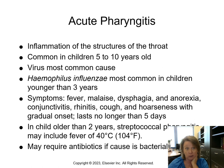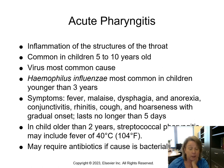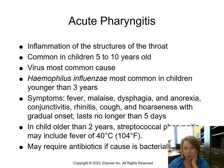In children older than two, streptococcal pharyngitis may include a fever of 104°F. When streptococcal infections are involved, we see those higher temperatures. Treatment includes an antipyretic — acetaminophen or Tylenol — dosed based on the child's age and weight. It may also require antibiotics if the infection is bacterial rather than viral.